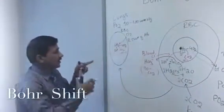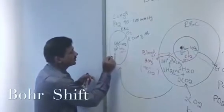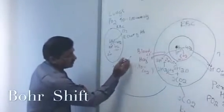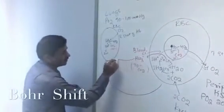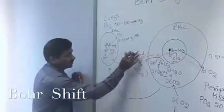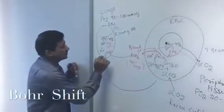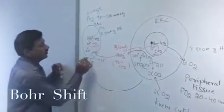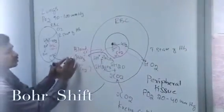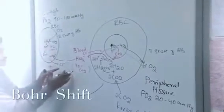Now hemoglobin is getting into the R state, and because of this conformational change the protons that are bound to histidine residues will be released into the cytoplasm. The bicarbonate which is carried in the blood now enters into the red blood cell in the peripheral circulation. HCO3 minus enters the red blood cell, and at the same time chloride is coming out. This balances the negative charge — previously in peripheral tissue bicarbonate was coming out and chloride was moving in, but now in the lungs bicarbonate is getting into the red blood cell and chloride is moving out.